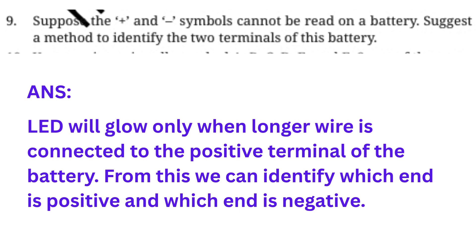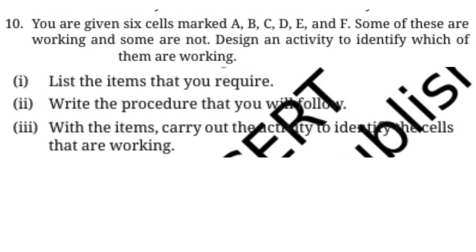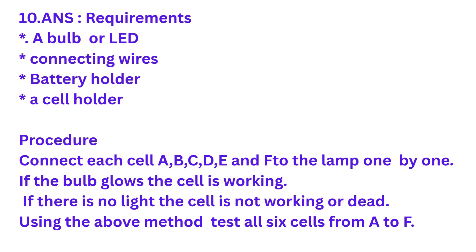Question number ten: You are given six cells marked A, B, C, D, E, and F. Some are working and some are not. Design an activity to identify which are working. Requirements: a bulb or LED, connecting wires, a battery holder, and a cell holder. Procedure: Connect each cell A, B, C, D, E, F to the lamp one by one. If the bulb glows, the cell is working. If there is no light, the cell is dead. Test all six cells this way.